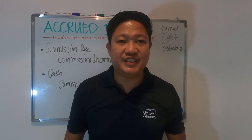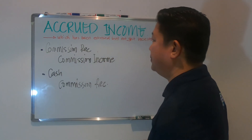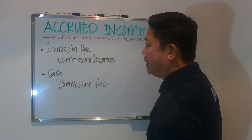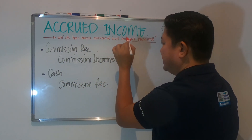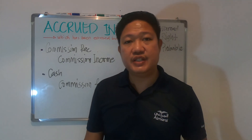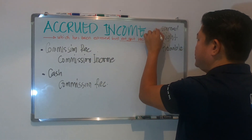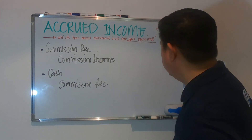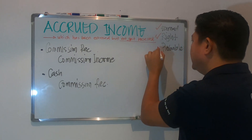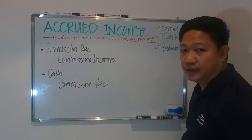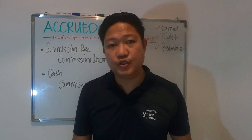Hi guys, welcome back to my channel. This is Arnel and today we will discuss about accrued income. Accrued income are those income which has been earned but not yet received, meaning the service is already rendered. To accrue your income you have to make sure that it is already earned and you have the right to collect the money, and the collectability is probable.